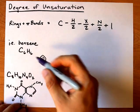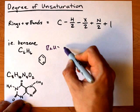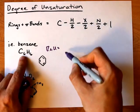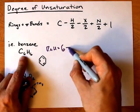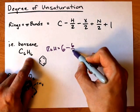So benzene C6H6 will have a degree of unsaturation of: number of carbon atoms, six, minus number of hydrogen atoms, six, divided by two.